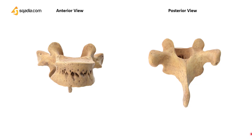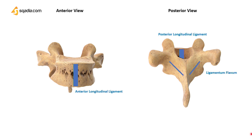The upper and lower borders of the body give attachment in front to the anterior longitudinal ligament, and at the back to the posterior longitudinal ligament. The lamina provides attachment to the ligamentum flavum.